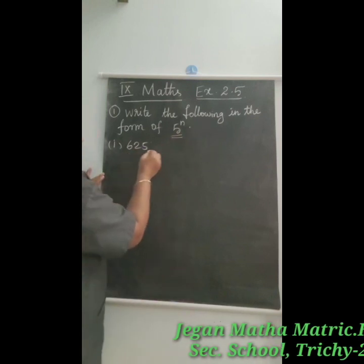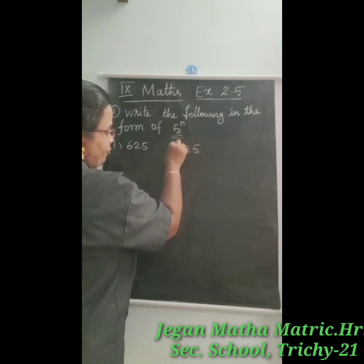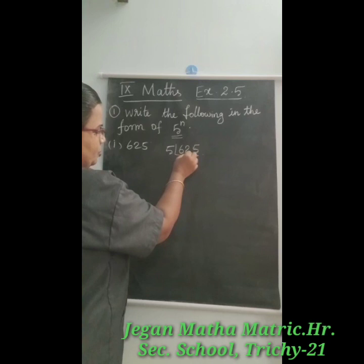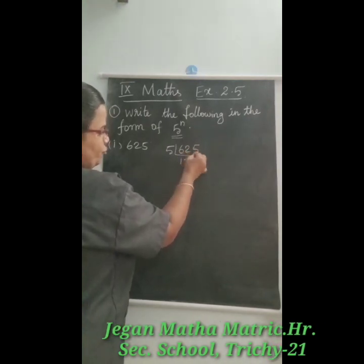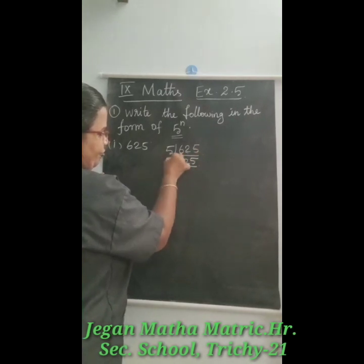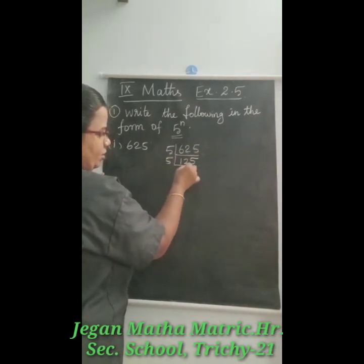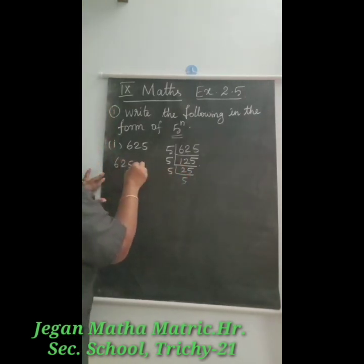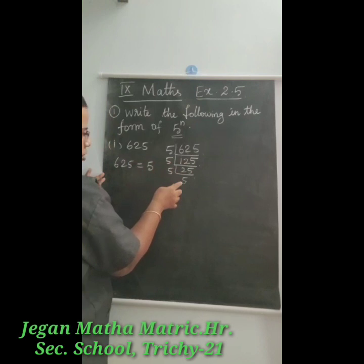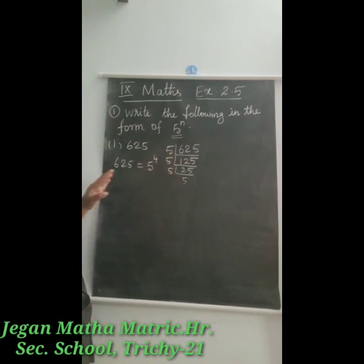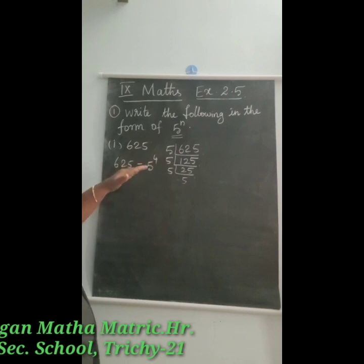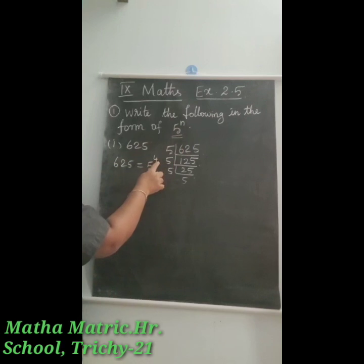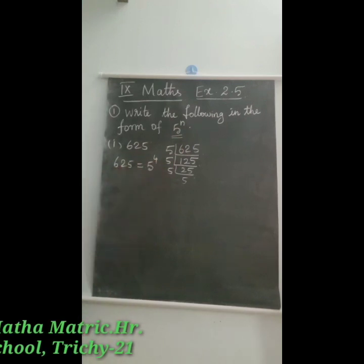We have to factorize 625 by dividing by 5. So 625 divided by 5 gives 125, divided by 5 gives 25, divided by 5 gives 5, divided by 5 gives 1. So 625 equals 5 power 1 × 5 power 1 × 5 power 1 × 5 power 1 — that is 4 times. So in terms of 5 power n, we get 5 power 4, so n is equal to 4. Therefore 625 is equal to 5 power 4.